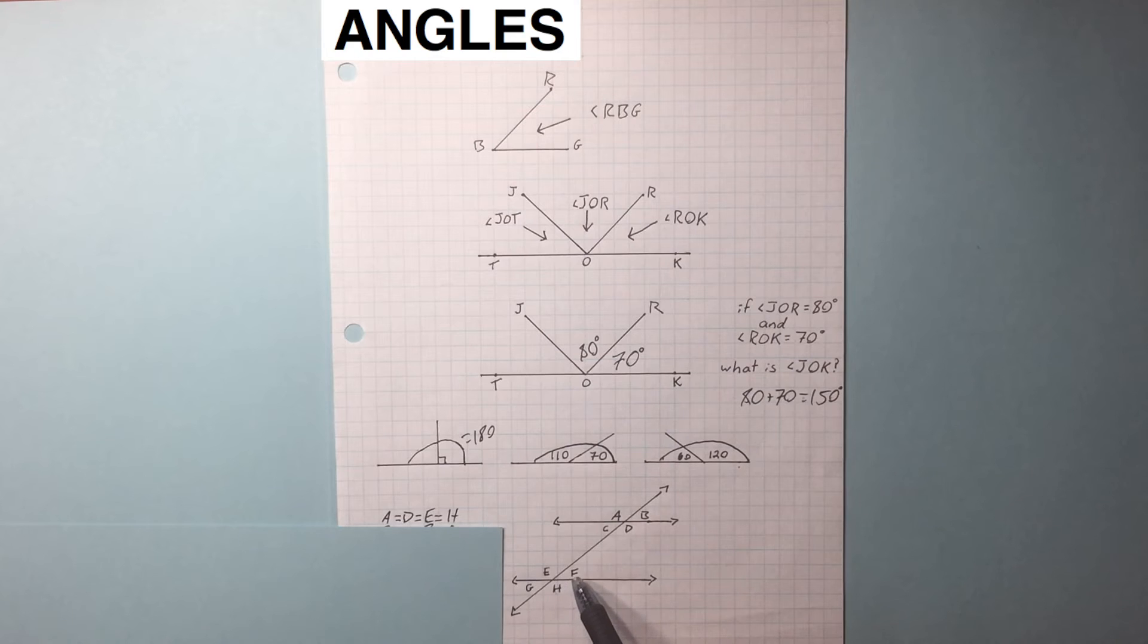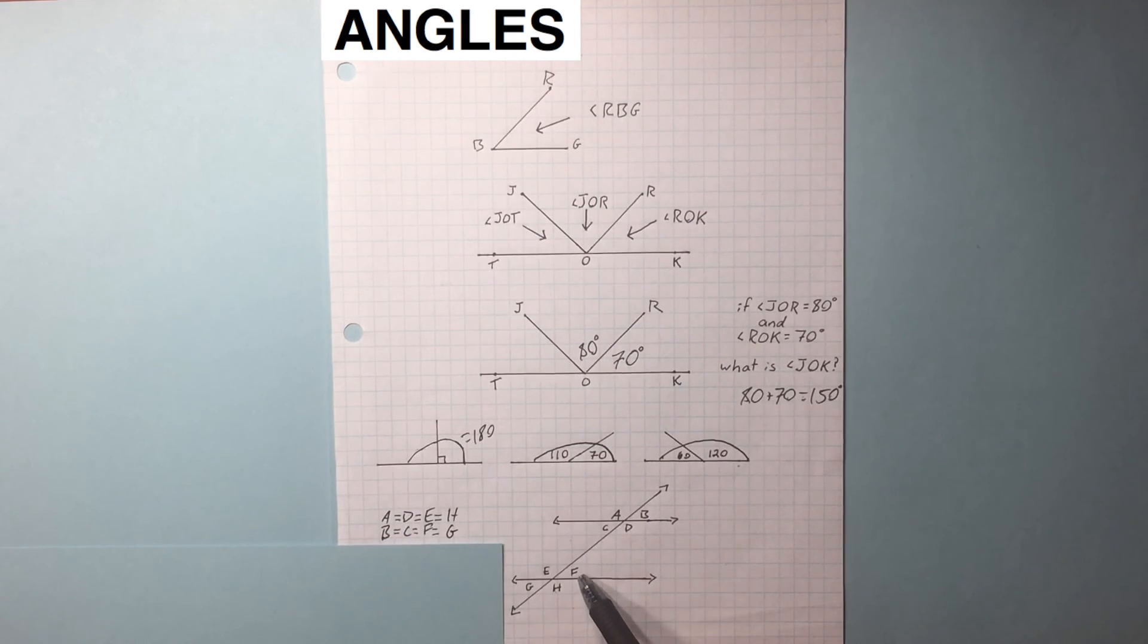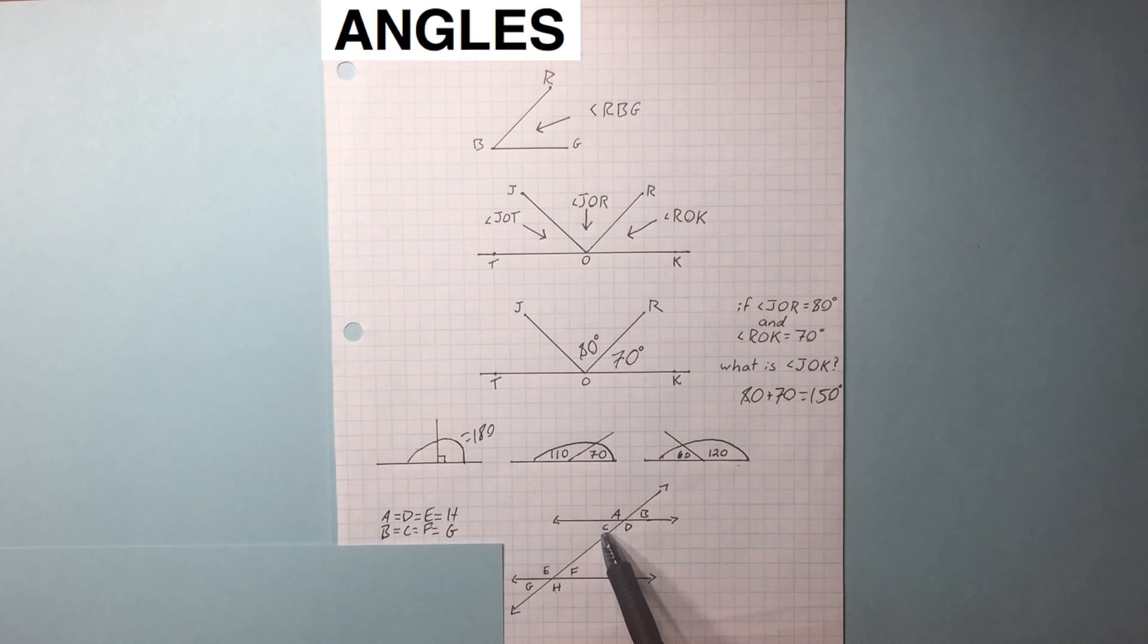This angle right here, G equals F, also equals C, also equals B. Let's say H is 100, solve for C. If H is 100, H and F are on a straight line. Therefore, they have to equal 180 added up. F is 80. And if F is 80, that means C is 80.